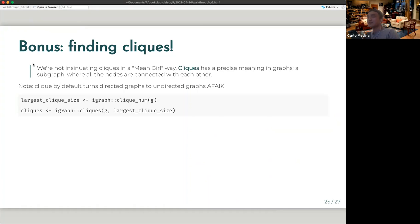How are we on time? I think I'm blazing through this. So we'll have time for questions then. So here's a bonus called finding clicks on our Tidy Tuesday network. So here, we're not insinuating clicks as in the mean girl way of clicks. So for graphs, clicks actually has a very precise meaning. It basically just says, from my whole graph, can I find a section of it wherein all the members of that graph is connected? So for example, you have 10 users. Out of those 10 users, you have three users that are connected to each other. Then those three users are a click within that whole graph.